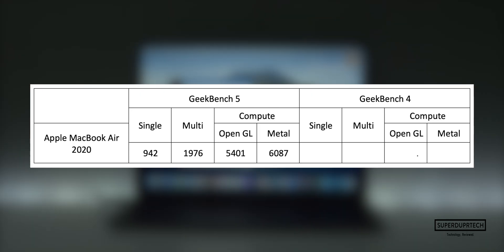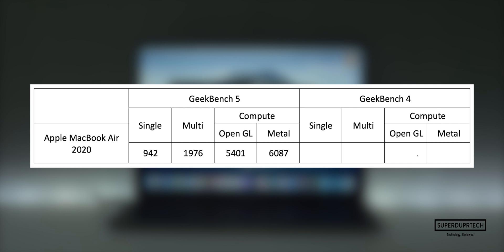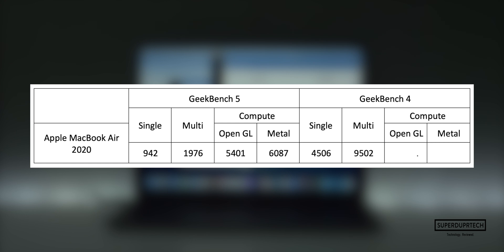I also used Geekbench 4, which is a slightly older version of Geekbench, but it should be good enough to give comparisons between older models of Macs. With Geekbench 4 I got a single core score of 4506 and a multi-core score of 9502.